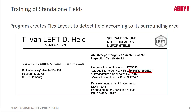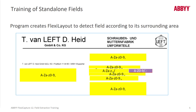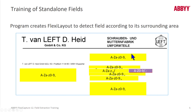What FlexiCapture does to create this logic is it finds a number of anchor text strings, and then uses relations from those anchor text strings toward the target area to focus in on exactly where it should find the target field. So if this particular field moved up, there are enough dynamic relations that it won't throw off our search area.